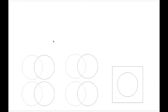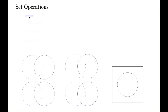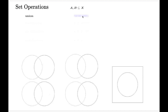In this video I will briefly introduce the basic set operations. The first one is the union of two sets. We're talking about two sets A and B which come from a larger common set X, and the union is a collection of all elements.